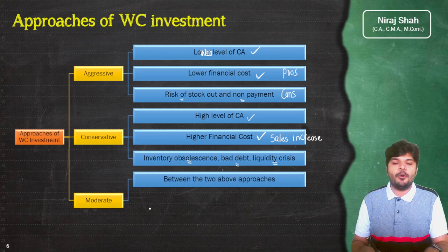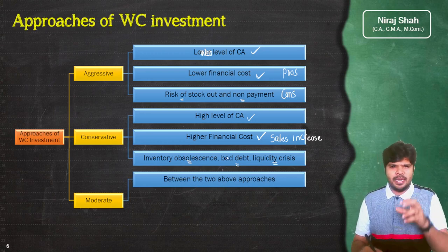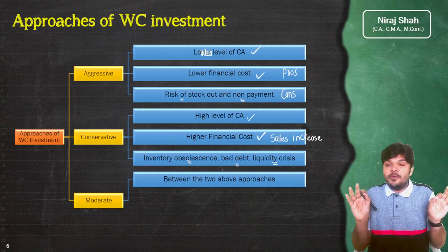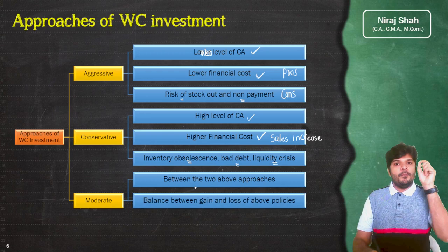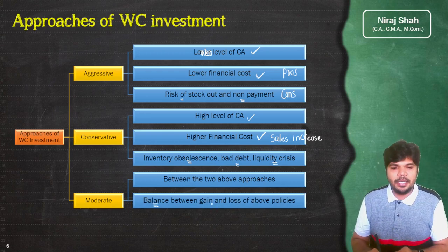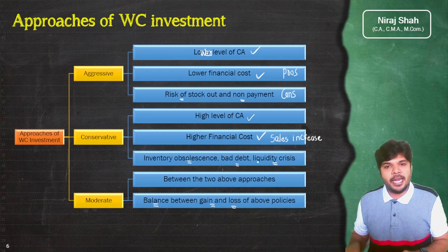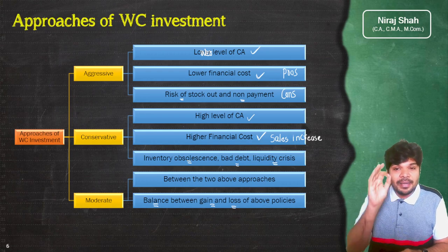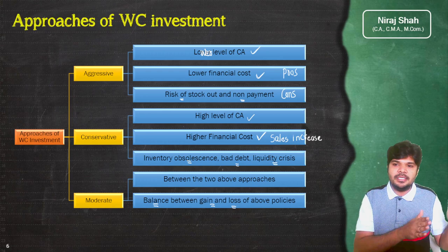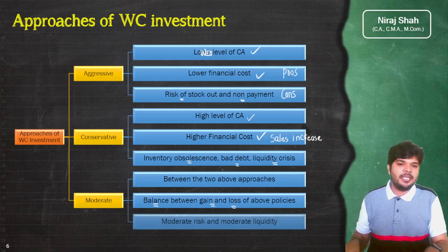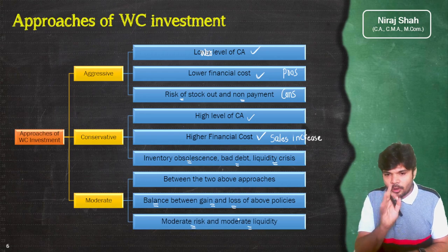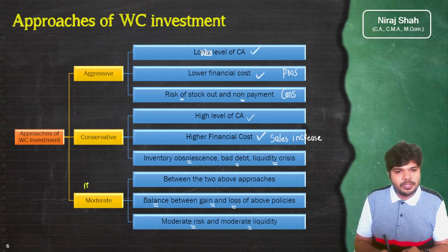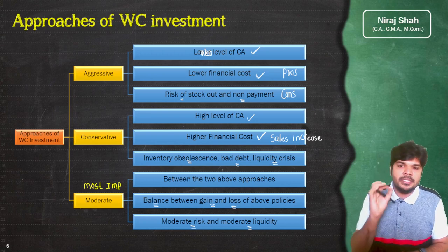Moderate policy दो approaches के बीच की है — बहुत ज्यादा aggressive भी नहीं यानि current assets में बिल्कुल investment नहीं करूंगा ऐसा नहीं, और साथ ही बहुत ज्यादा current assets में investment भी नहीं रखना है। Moderate policy में आप balance बनाते हो — दोनों policies के pros and cons को ध्यान में रखकर, nature of your business के हिसाब से, ज्यादा से ज्यादा benefit लेने की कोशिश करते हो। इसमें risk भी moderate रहता है और moderate liquidity attain कर सकते हो। आज की तारीख में ज्यादातर industries moderate working capital policy को ही follow करती हैं।